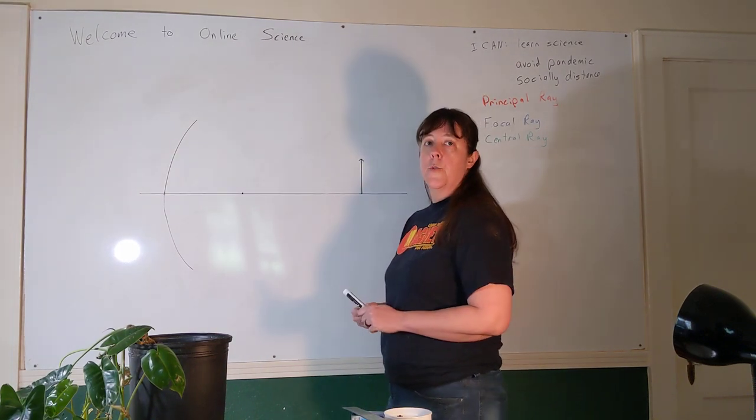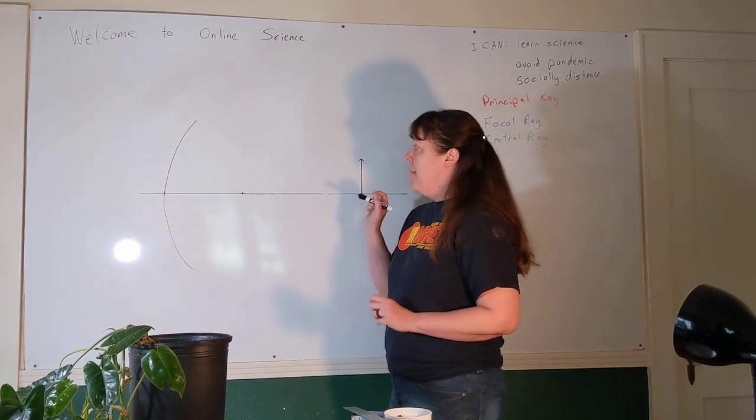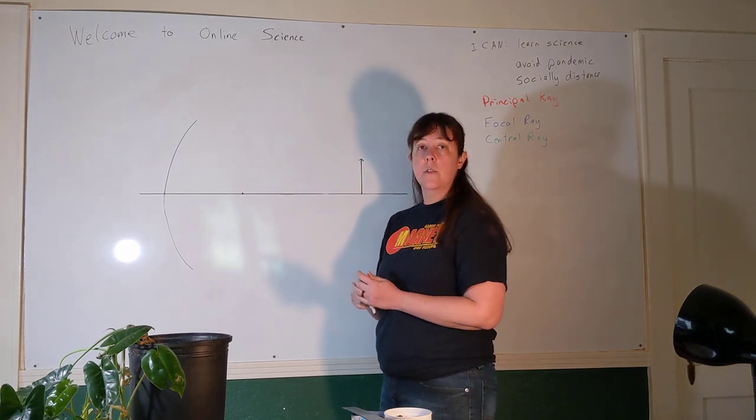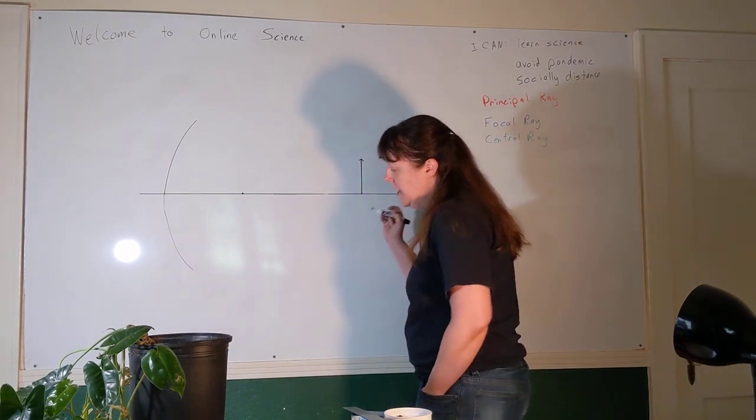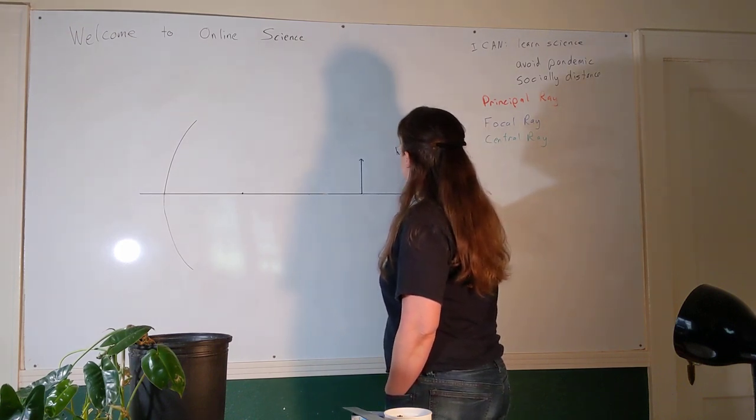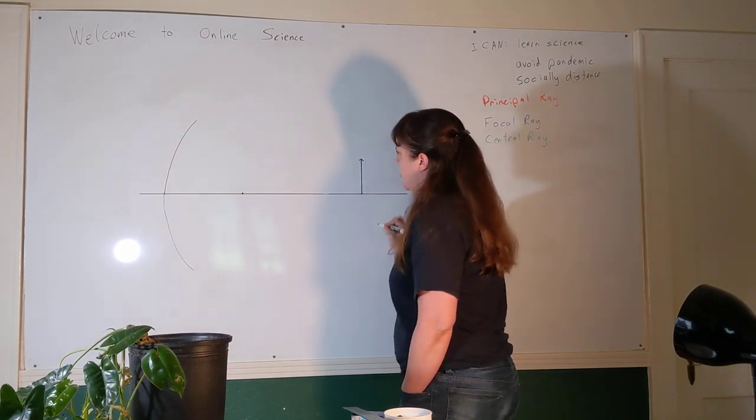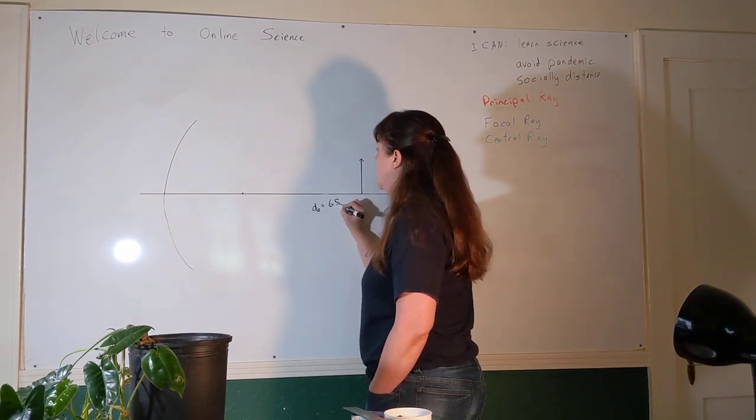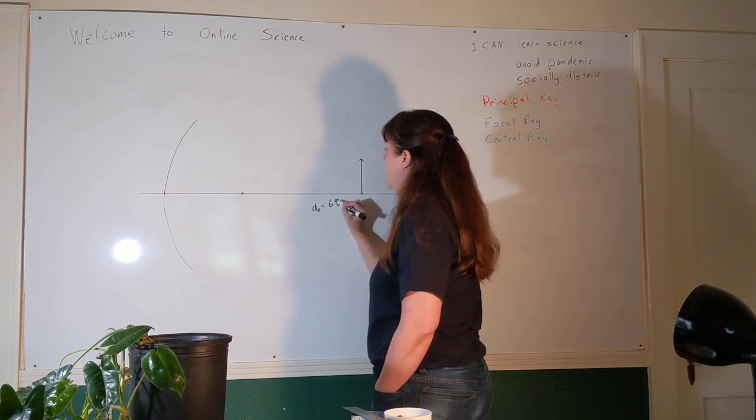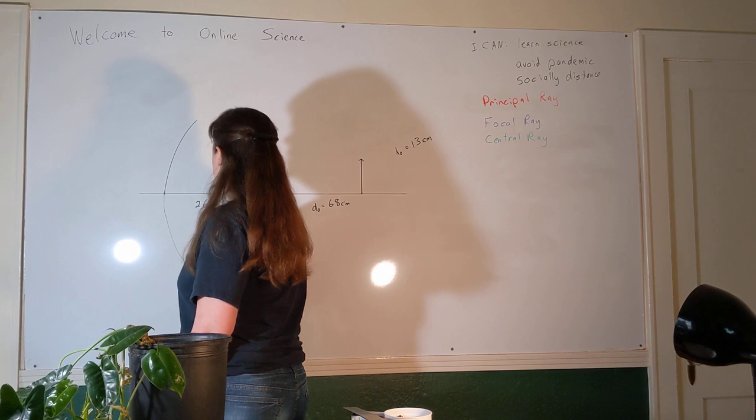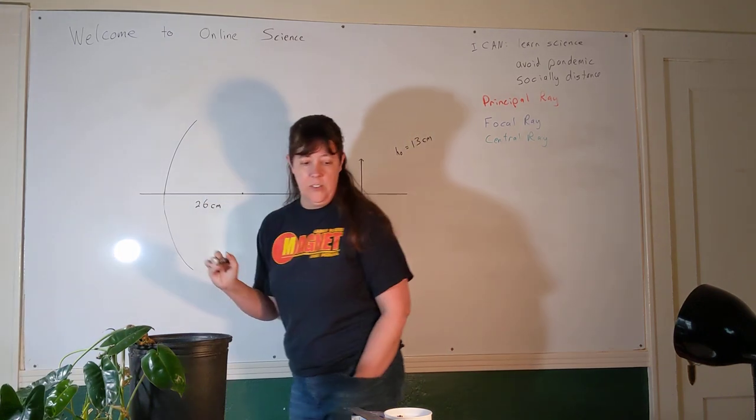The ray diagram that we drew in the previous video, I measured some numbers, but we didn't actually do any calculations with them. So if you have those notes and you want to compare, we had an image height of 13 centimeters, an image distance of 68 centimeters, and a focal length of 26 centimeters.